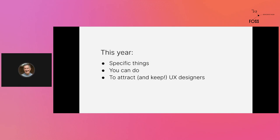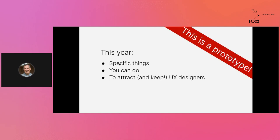I'm flipping it around. Instead of talking about my experience as to why it was so hard for me, I'm flipping around to talk about specific things that you can do as a maintainer to attract and keep UX designers. I really want to stress though that this is a prototype — I'm basically summarizing all of the tricks that I use when I work on various teams and applying it to open source. I expect there could be a lot of questions and there may be better ways of doing what I suggest. Please write questions in the question tab. I'm going to be in the breakout room afterwards. I really want this to be a learning experience for all of us.